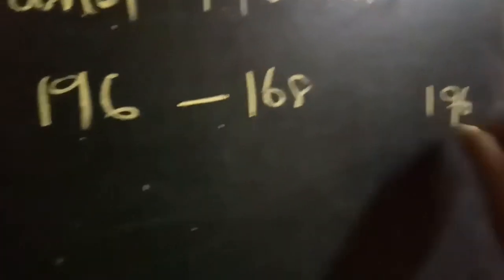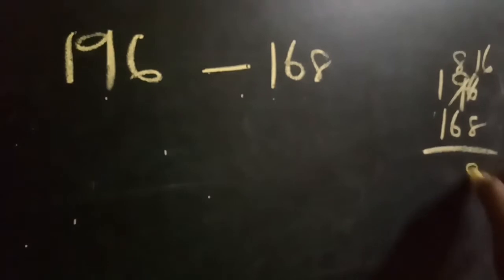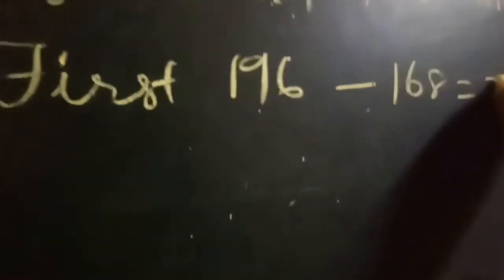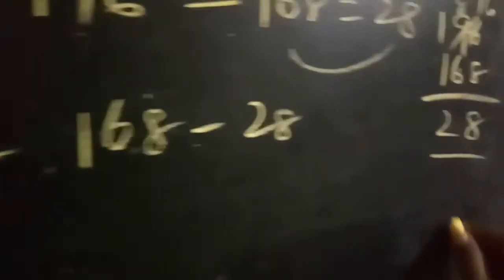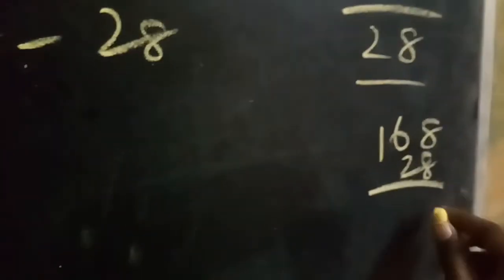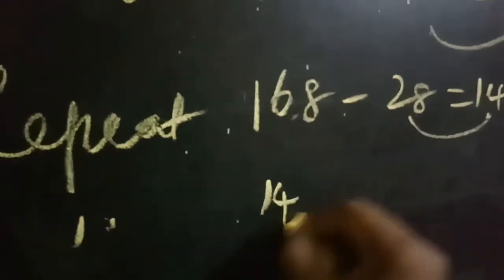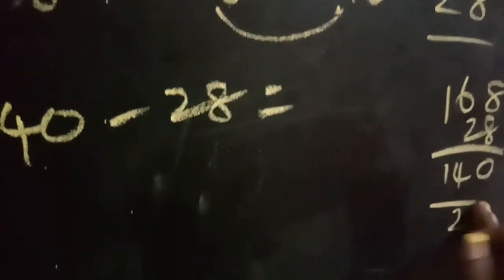196 minus 168 equals 28. Next, repeat with the two largest numbers, 168 and 28. 168 minus 28 equals 140.